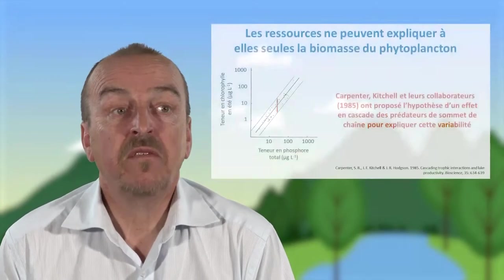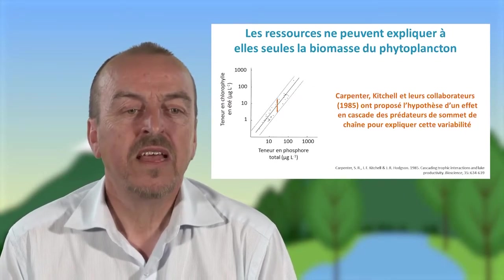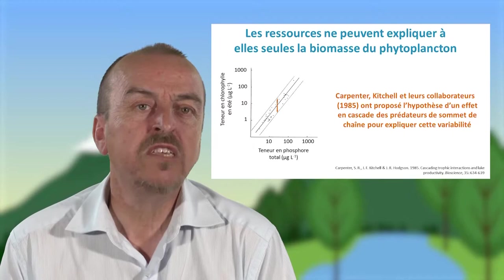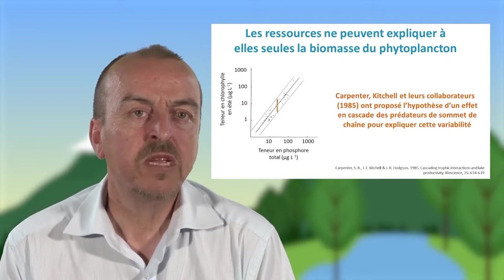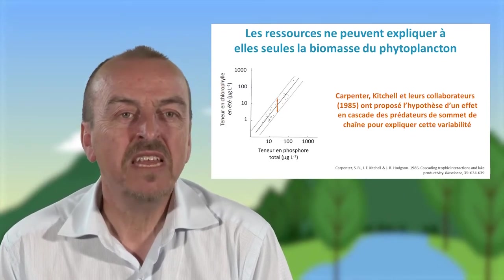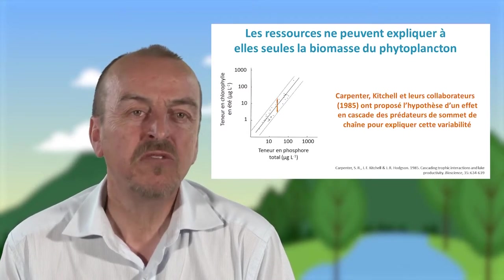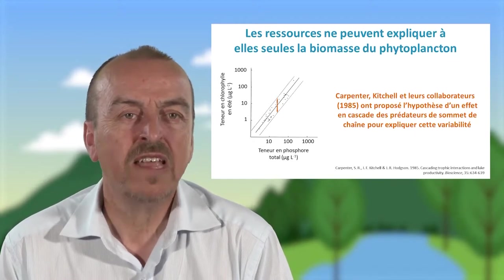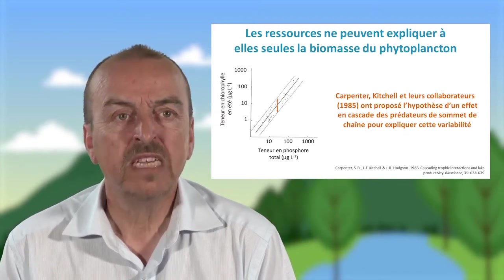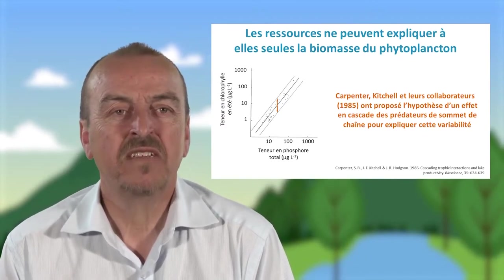Cet effet du phosphore a mis en évidence le rôle important des ressources. Mais si on regarde la figure que je vous ai montrée précédemment, qui met en évidence cette relation entre le phosphore et la biomasse algale, on peut aussi se rendre compte que la ressource n'explique pas tout. L'amplitude de la variabilité pour un même niveau d'apport en nutriments de la biomasse algale est relativement forte : on a quasiment un facteur 10 de variation pour un même niveau de quantité de phosphore dans les lacs. Cette variabilité inexpliquée par les ressources représente à peu près la moitié de la variabilité totale de la quantité d'algues dans les écosystèmes lacustres.